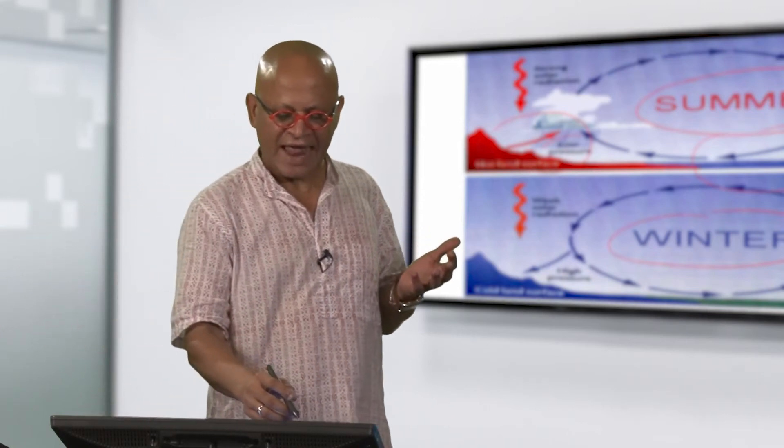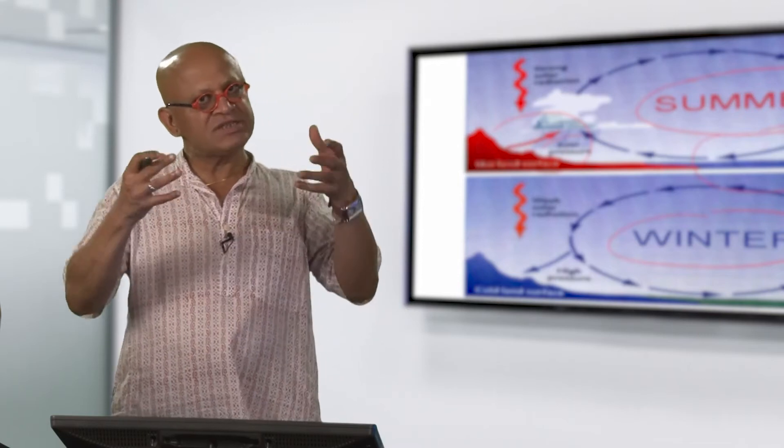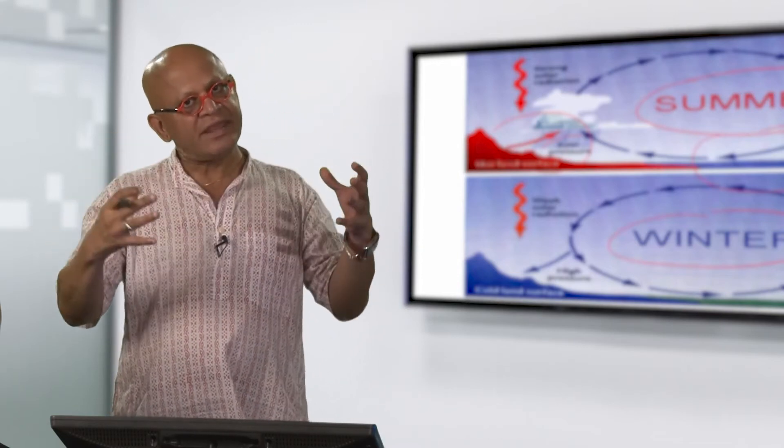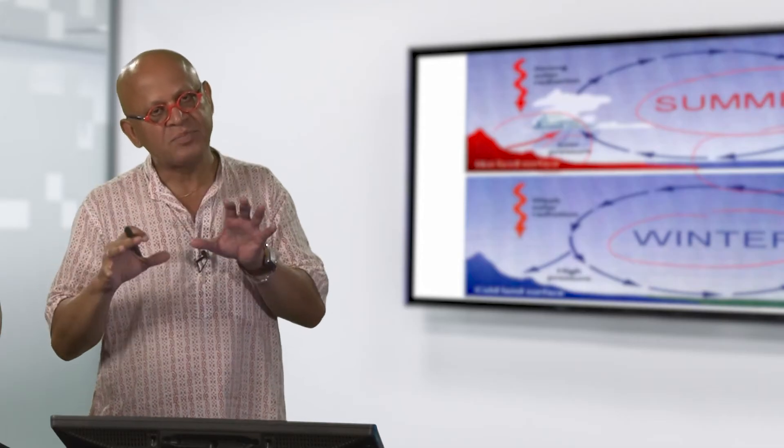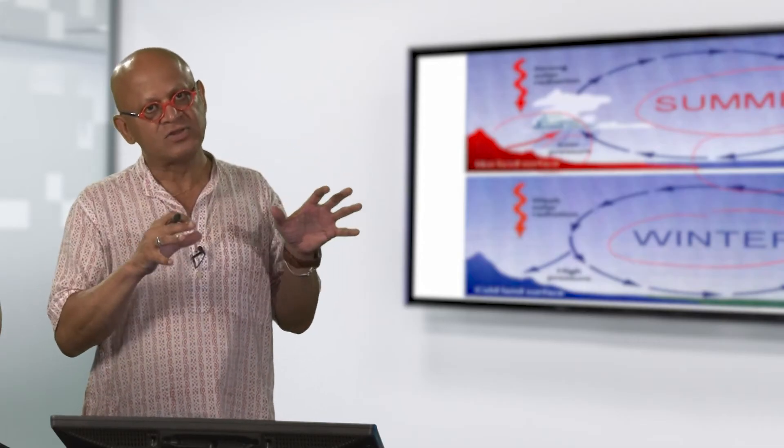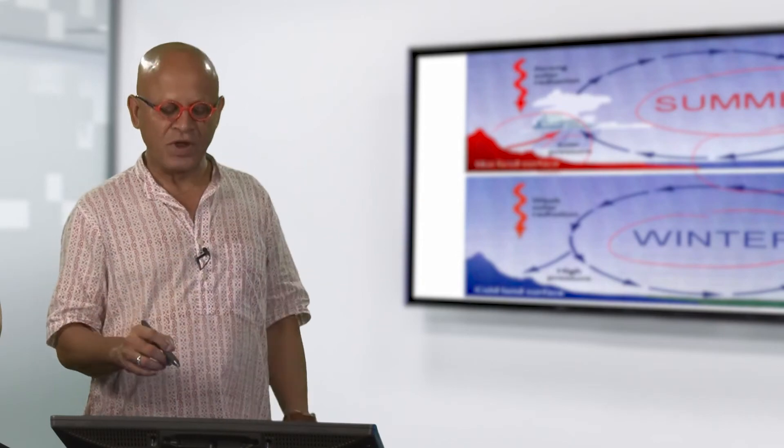What happens? So as the land warms, the air begins to rise and it creates a low pressure, and since the ocean is warming but much slower, it is at a cooler temperature so it has higher pressure than land.